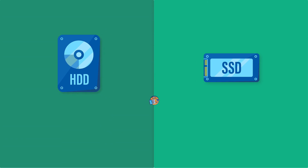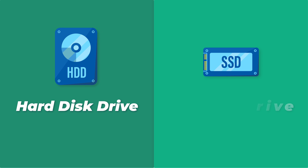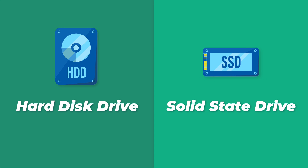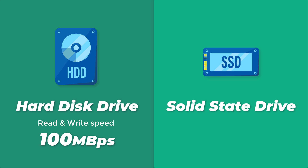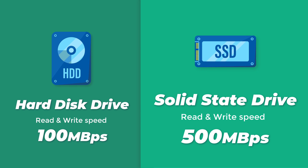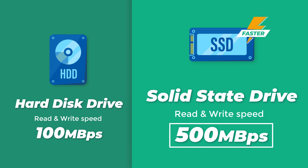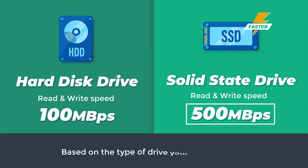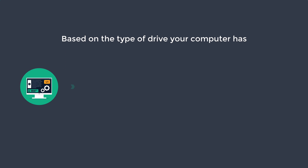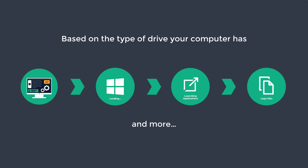We currently have two types of storage drives that we use on our computers: hard disk drive, which is HDD, and solid state drive, which is SSD. A hard disk can read and write files with speeds around 100 MB per second, and SSDs can read and write files with speeds around 500 MB per second. As you can see, SSDs are much faster than hard disk drives, so there's a significant speed difference based on the type of drive your computer has. This includes the time it takes for your computer to load Windows, open apps, copy files and more.